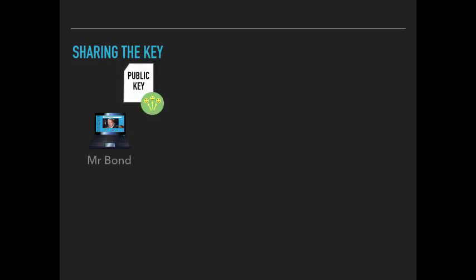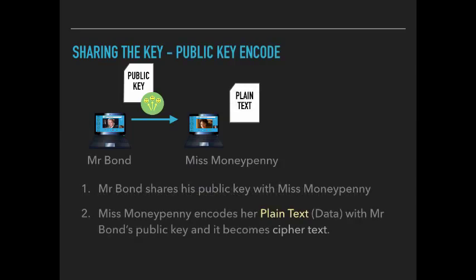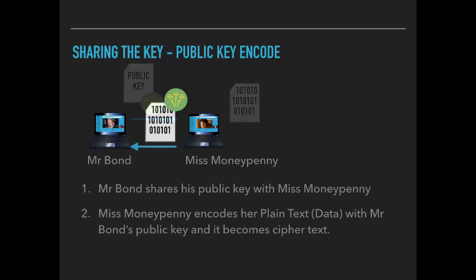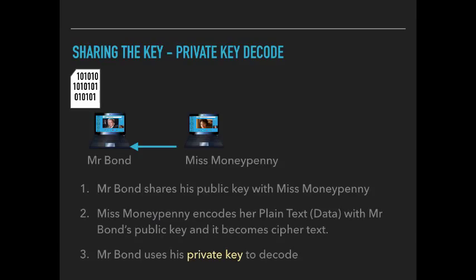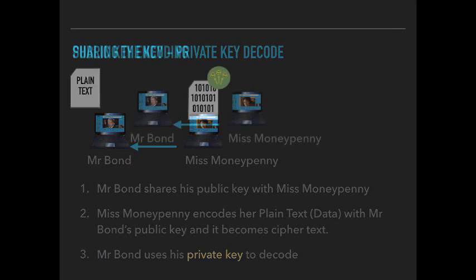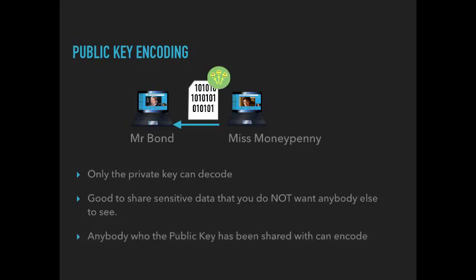Let's see how that sharing process works. He sends out his public key to Miss Moneypenny. She encodes her plain text data with Mr. Bond's public key and it becomes ciphertext. That ciphertext gets sent back. Mr. Bond then uses his private key to decode. Only the private key can decode in this situation. It's good for sharing sensitive data that you do not want anybody else to see.